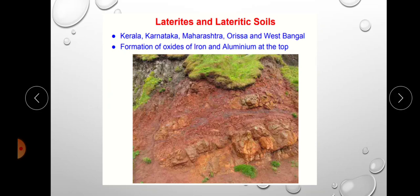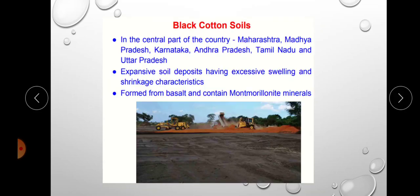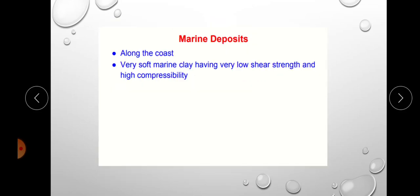Black cotton soil is found in the central parts of India — Maharashtra, Madhya Pradesh, Karnataka, Andhra Pradesh, Tamil Nadu, and Uttar Pradesh. It is a very expansive soil deposit with excessive swelling and shrinkage characteristics. Black cotton soil is very weak and has expansive properties due to the presence of montmorillonite mineral. If planning to construct any building over black cotton soil, this soil must be removed and proper foundation provided.